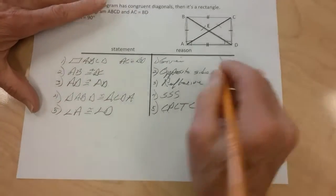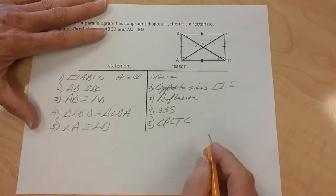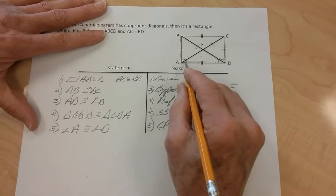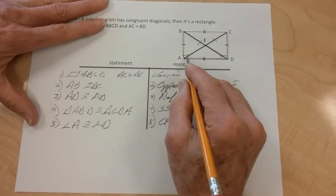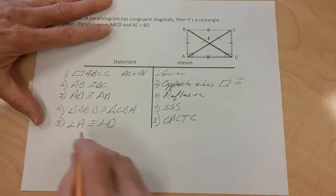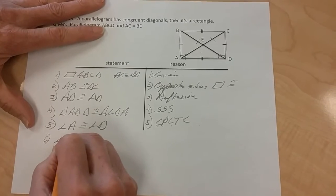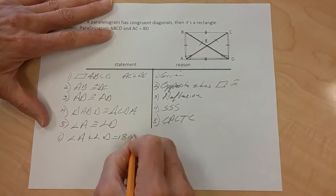Now, because this right here is a parallelogram, A plus D would have to be equal to 180 degrees because the consecutive angles of a parallelogram are equal to 180 degrees.